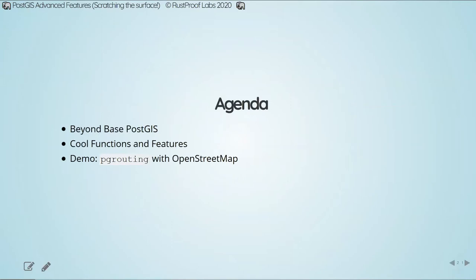Today's agenda: we're going to spend a little bit of time talking about extensions beyond PostGIS that integrate with PostGIS functionality and take it a step further. I'm going to spend a decent amount of time going over some functions and features that I personally find cool. And then we'll spend the majority of the time working on a demo using OpenStreetMap roads data and PG routing to get us from point A to point B.